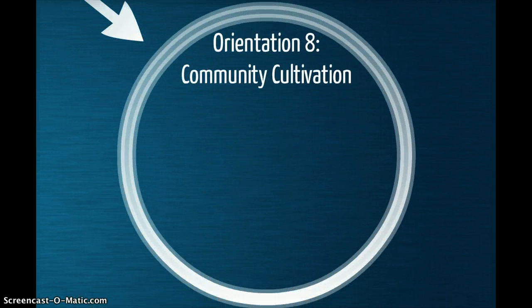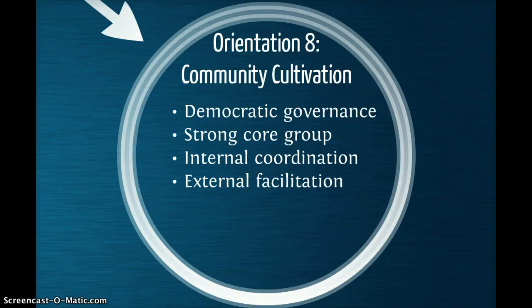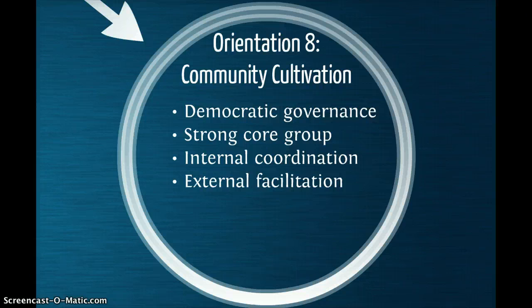Orientation 8 is about community cultivation. It includes democratic governance where members may have a voice in how it's run, a strong core group of members who habitually participate, internal coordination where a small team is assigned to take on responsibility of cultivating the community, and external facilitation where perhaps there's a community cultivation expert.